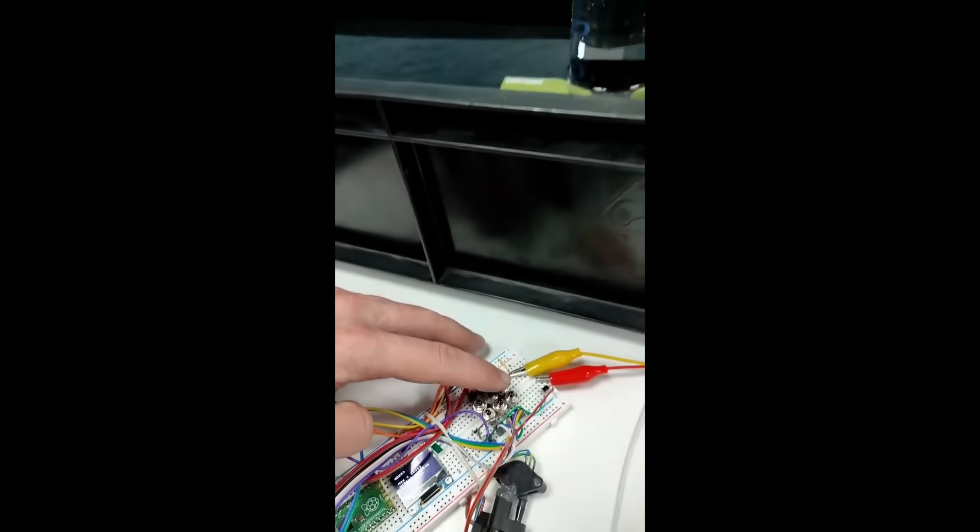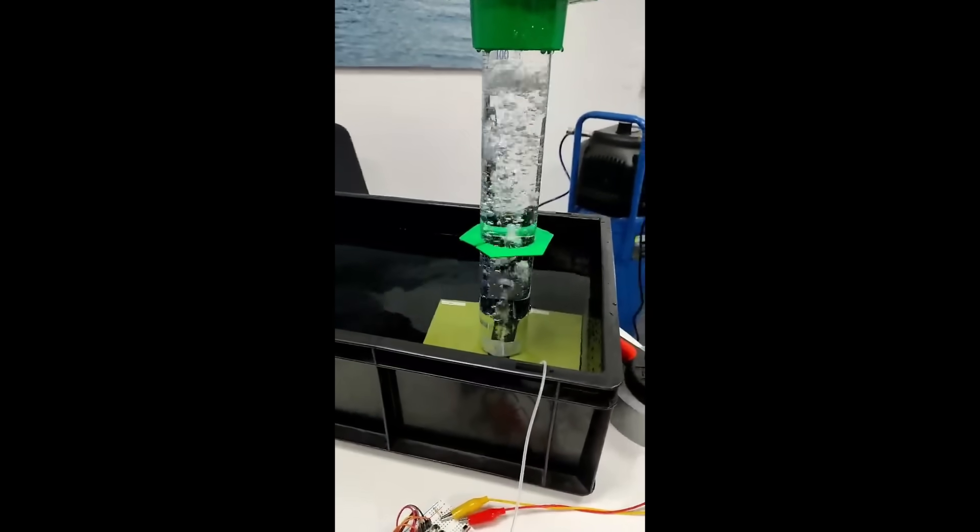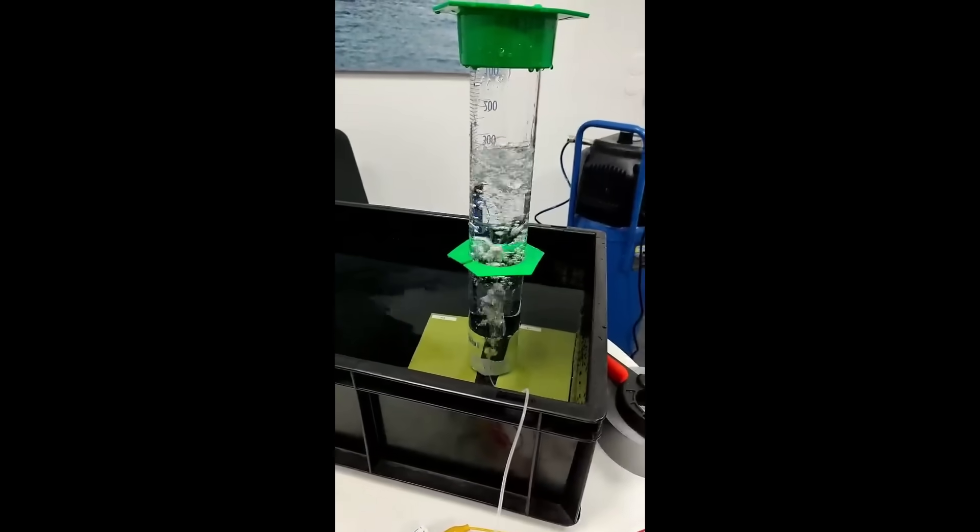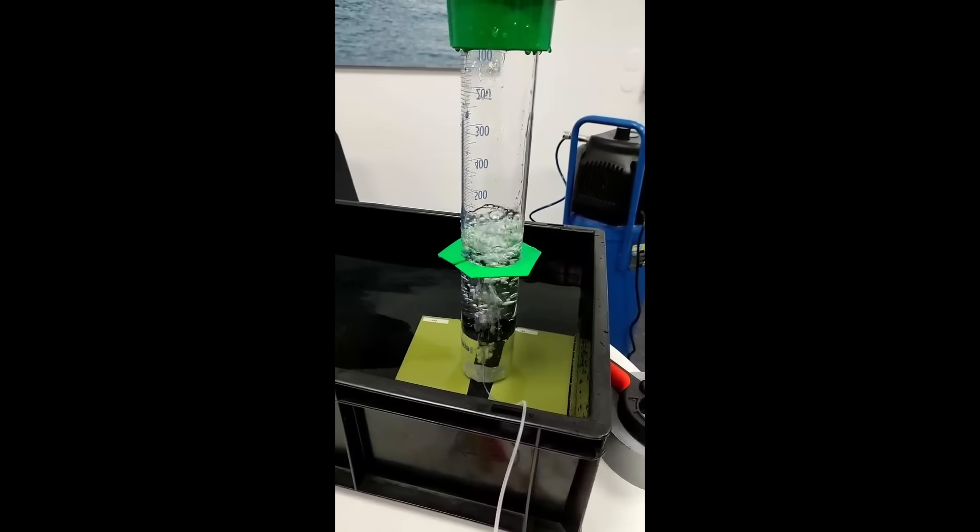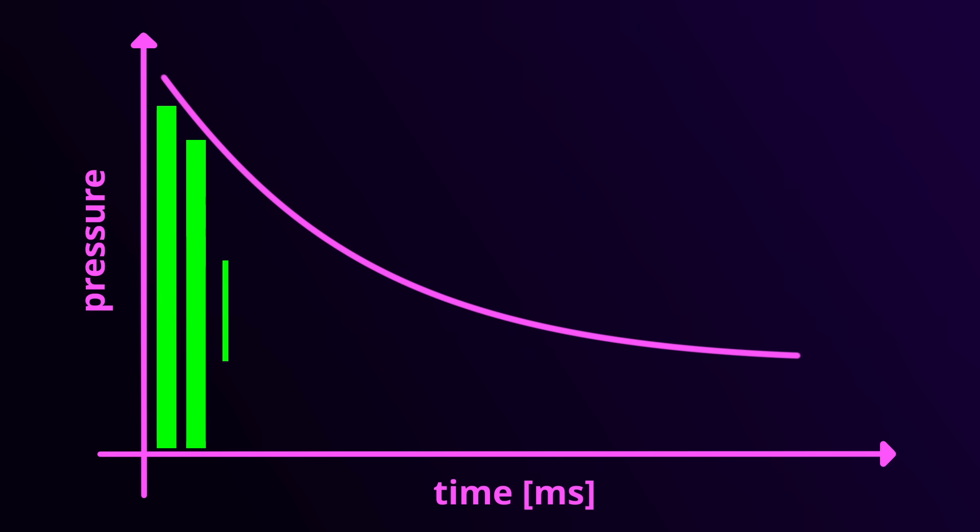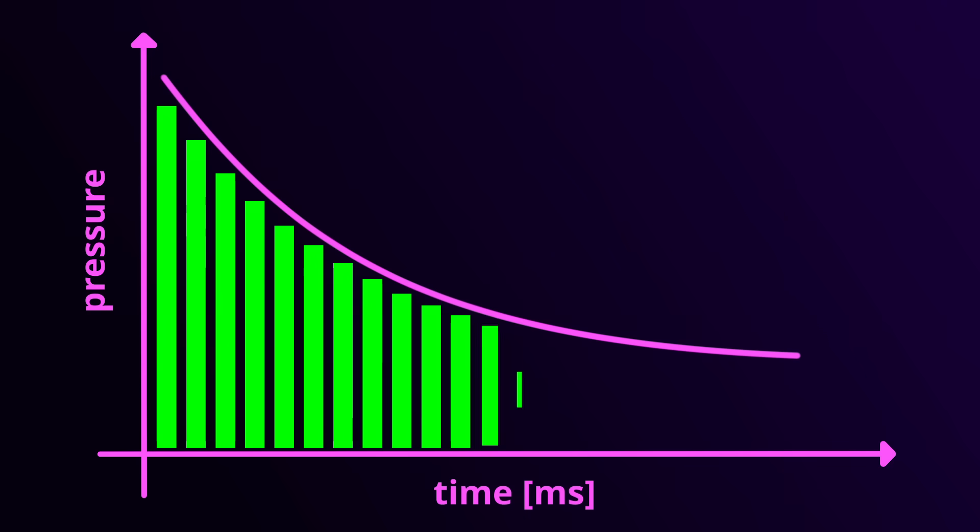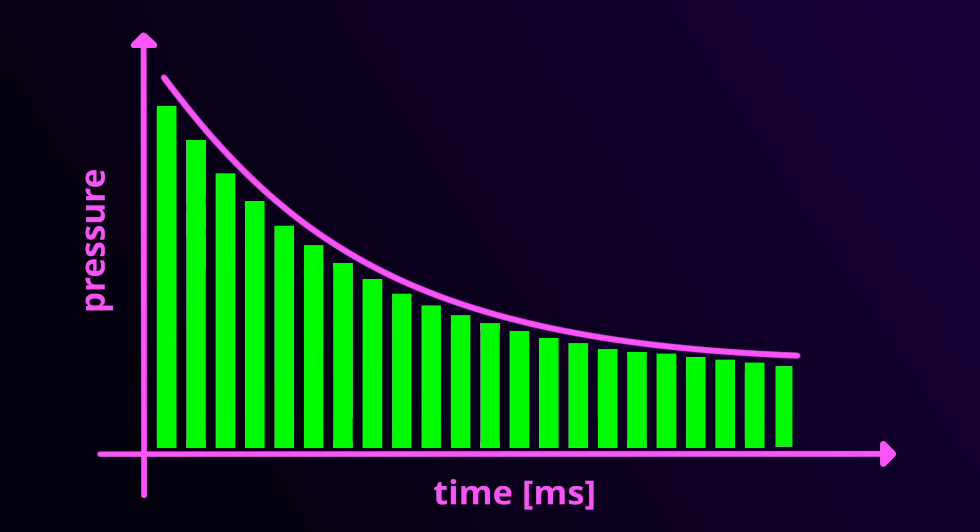Since the pressure immediately drops when the valve opens, I divide the time into millisecond intervals. Every millisecond I measure the pressure, calculate the gas amount for this short interval and sum up the values. As soon as the desired amount is reached, the valve closes.